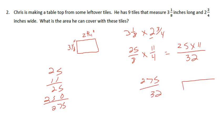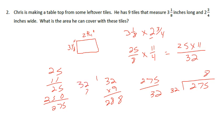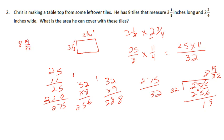Long division: 275 divided by 32. 32 times 9 is 288 — too much, so try 8. 32 times 8 is 256. 275 minus 256 is 19. So we get 8 and 19 thirty-seconds square inches for one tile.